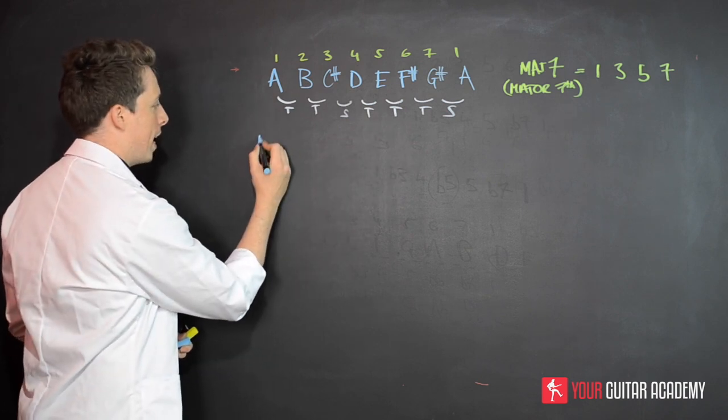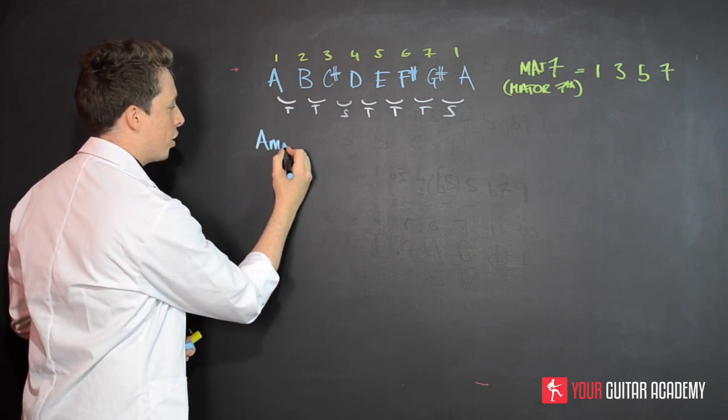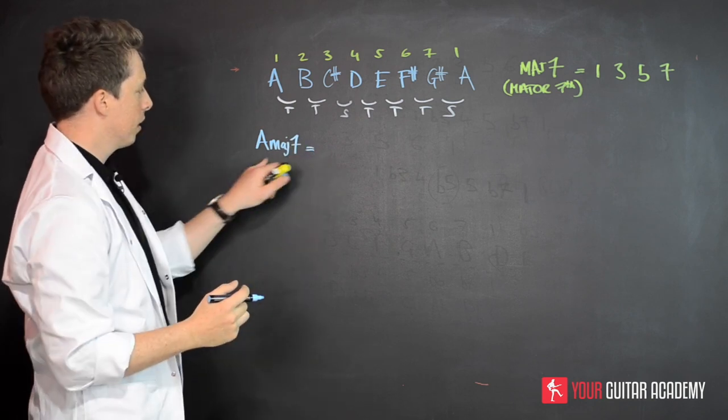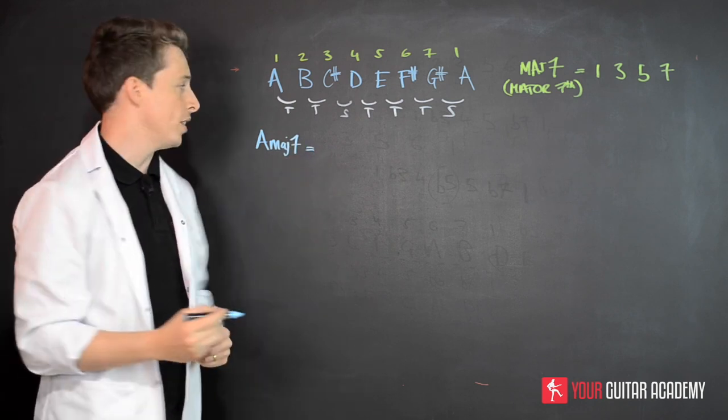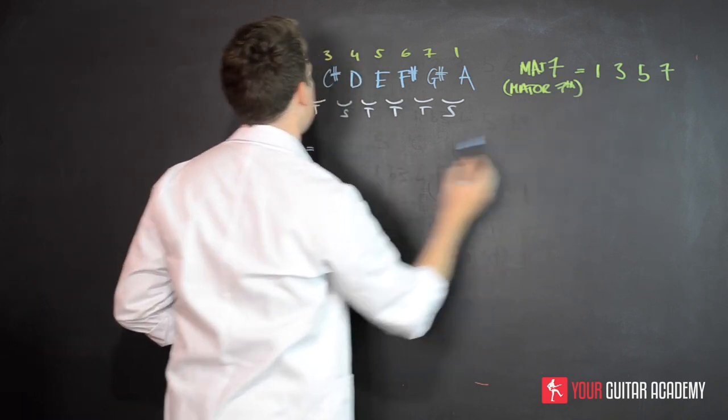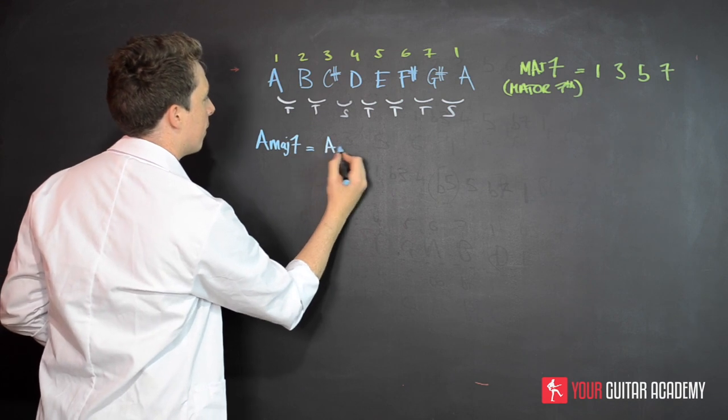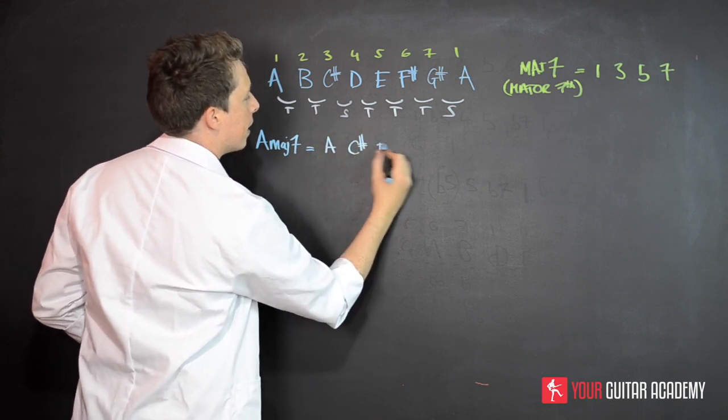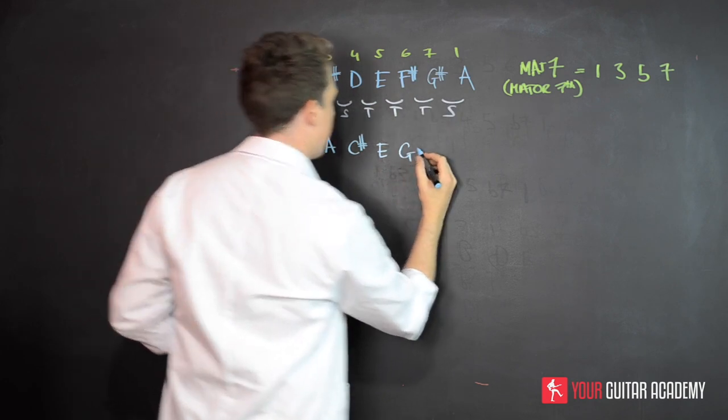Remember, we're doing an A major seven, so I'm going to write here 'A maj 7'. That's how you would typically see it written out. Then I know I'm going to take my root, my third, my fifth, and my seventh. So we've got A, we've got C sharp, we've got E—that's the fifth—and then the seventh is G sharp.